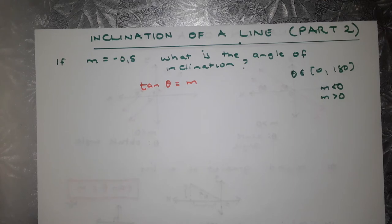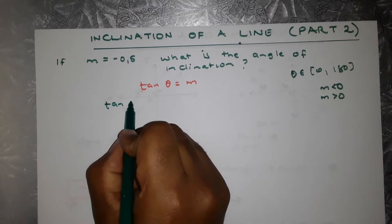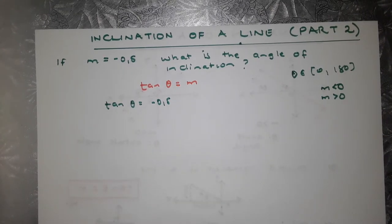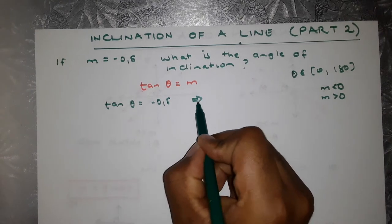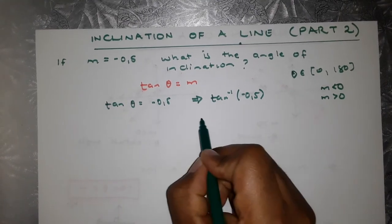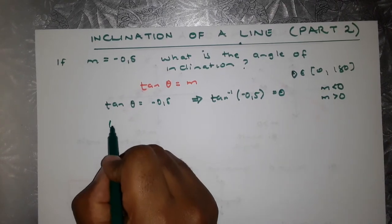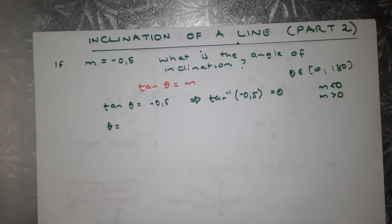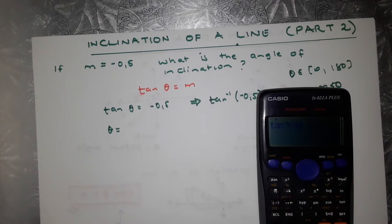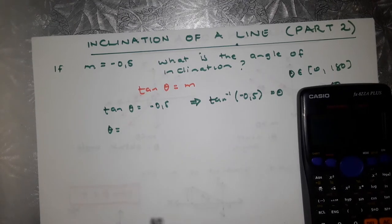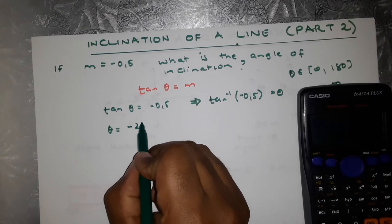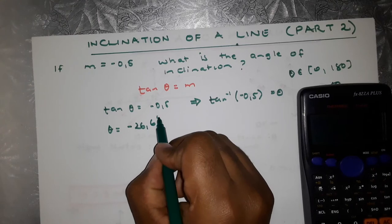So how are we going to find the angle of inclination? We know that the tangent of theta equals negative 0.5. It's a negative gradient, so to find theta, we're going to take the arc tangent of negative 0.5, which equals theta. Grab your calculator — the arc tangent of negative 0.5 equals approximately negative 26.6 degrees.